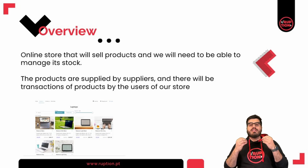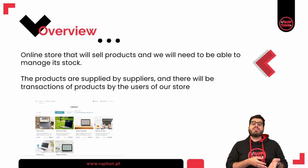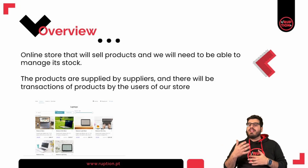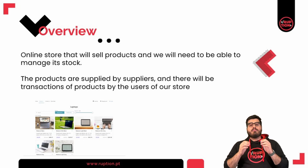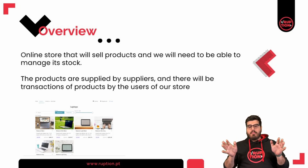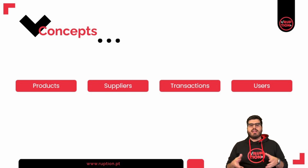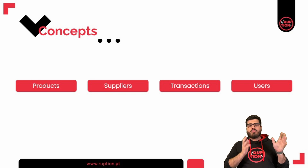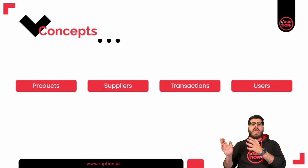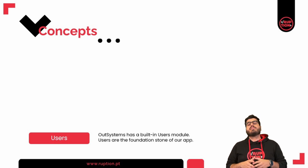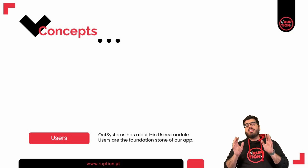This store will sell products and we will need to be able to manage its stocks. The products are supplied by suppliers and there will be transactions of the products by the users of our store. This may not seem like a lot of information, but if you think about it we can already build so much from it, because these are the requirements of our application. Let's start by breaking it down into concepts: products, suppliers, transactions, and users. By default, OutSystems covers the users — it is a built-in system table — so we don't need to worry about that, but users really are the foundation block of our application.